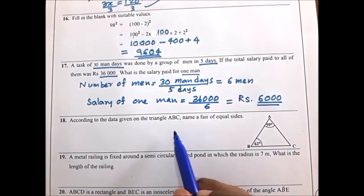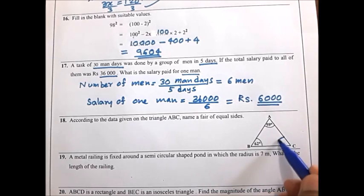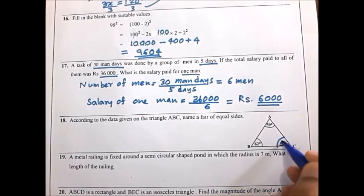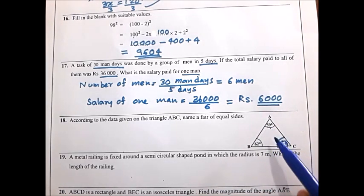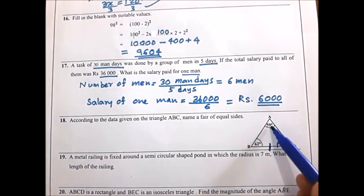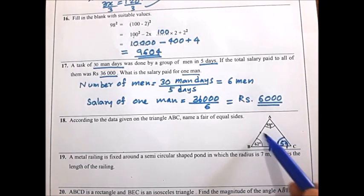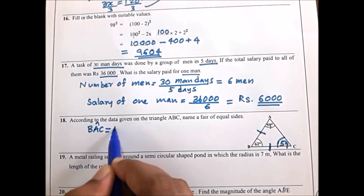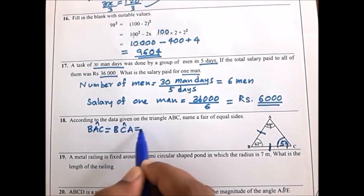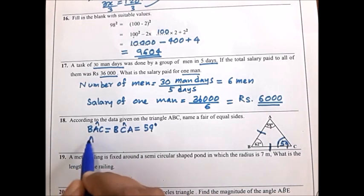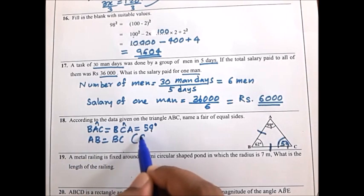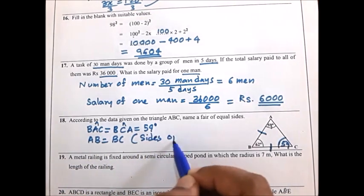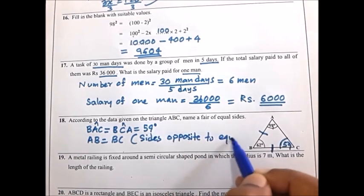For the 18th question, the angles are 62 and 59. Find the remaining angle — it is also 59. These two angles are equal, so the opposite sides should be equal. The side opposite angle BAC and side opposite angle BCA are equal (both 59 degrees), therefore AB equals BC. The reason is: sides opposite to equal angles are equal.